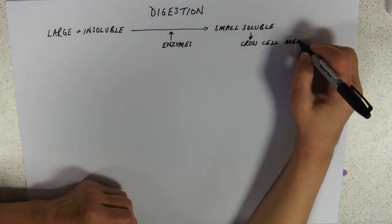Why do they need to be small and soluble? So they can cross cell membranes so that you can absorb them.